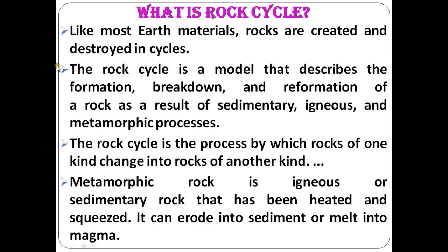Like most Earth materials, rocks are created and destroyed in cycles. The rock cycle is a model that describes the formation, breakdown, and reformation of rock as a result of sedimentary, igneous, and metamorphic processes. The rock cycle is the process by which rocks of one kind change into rocks of another kind.